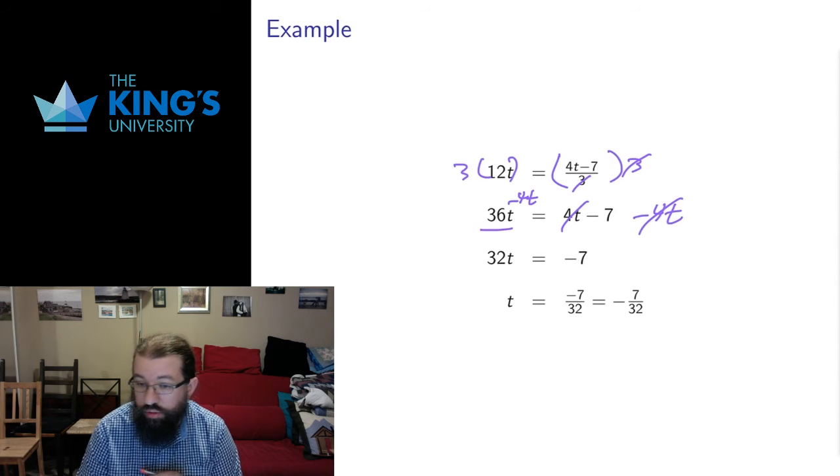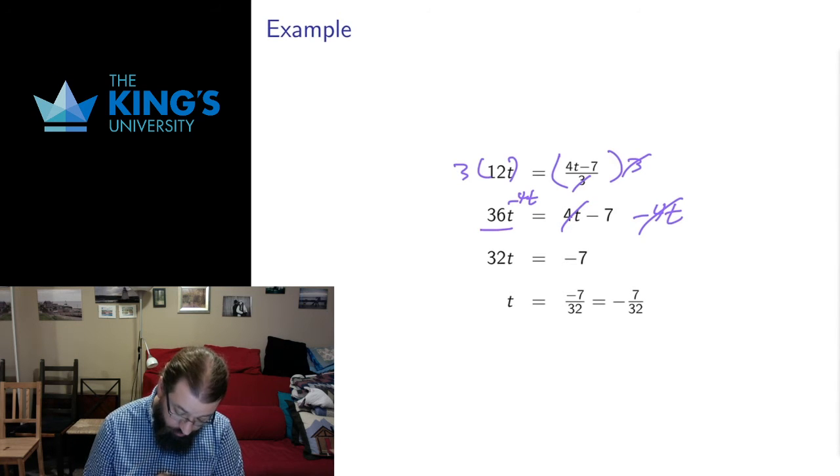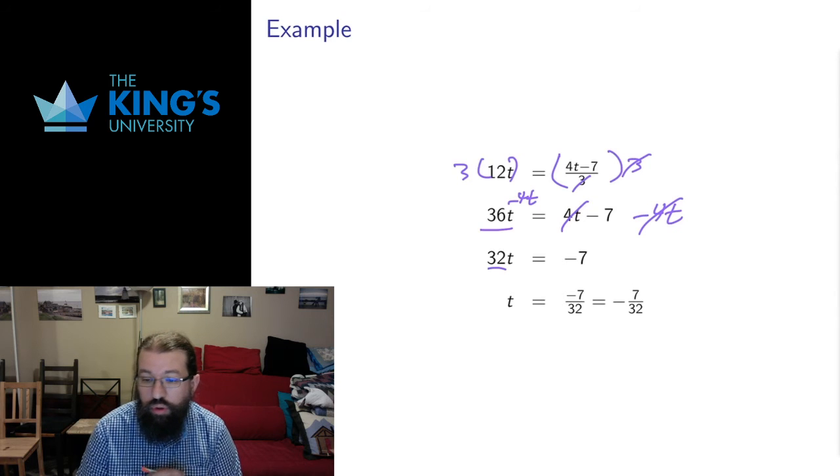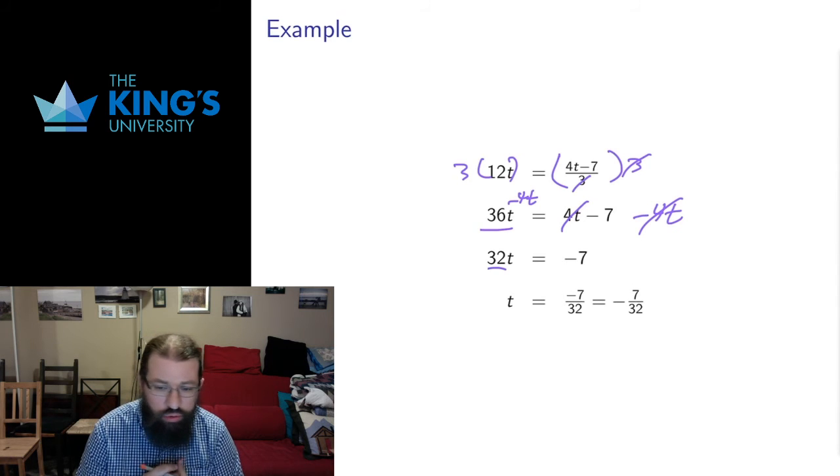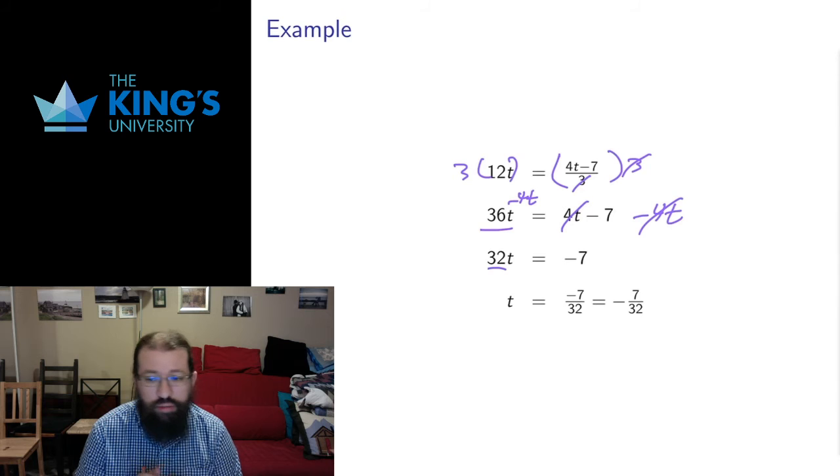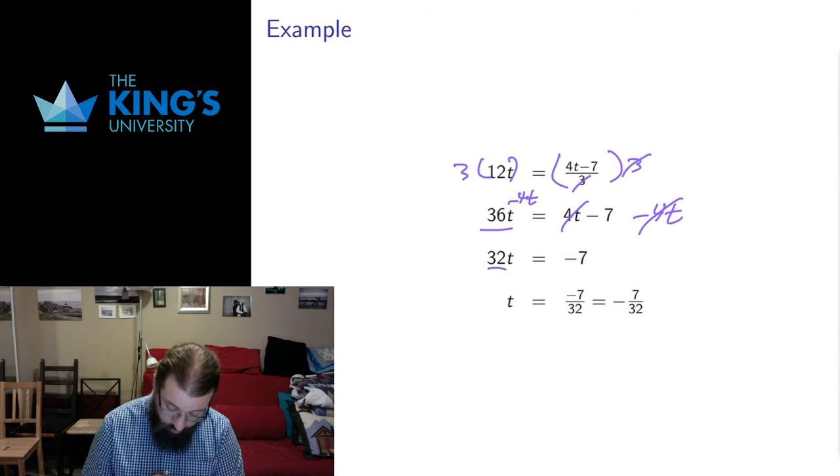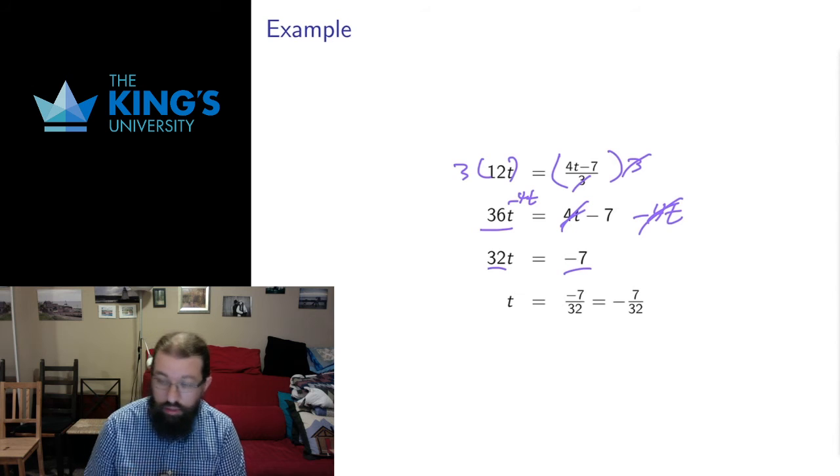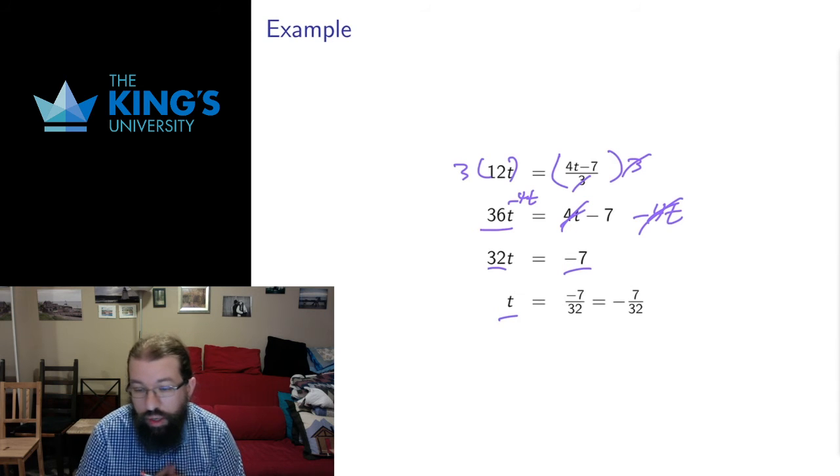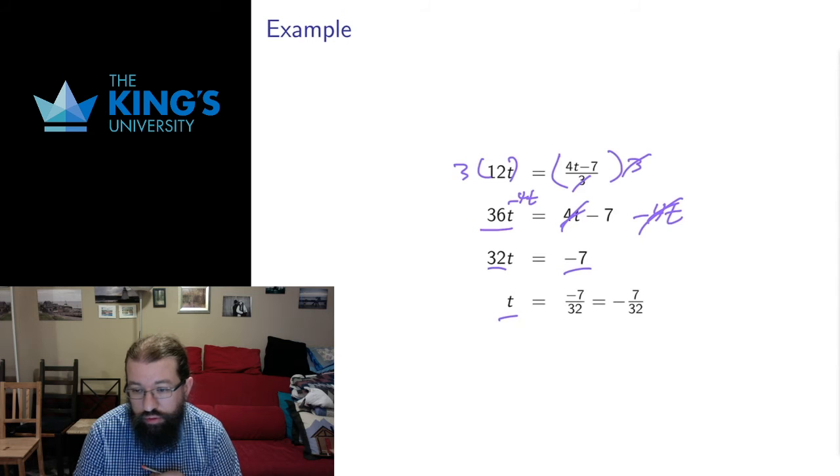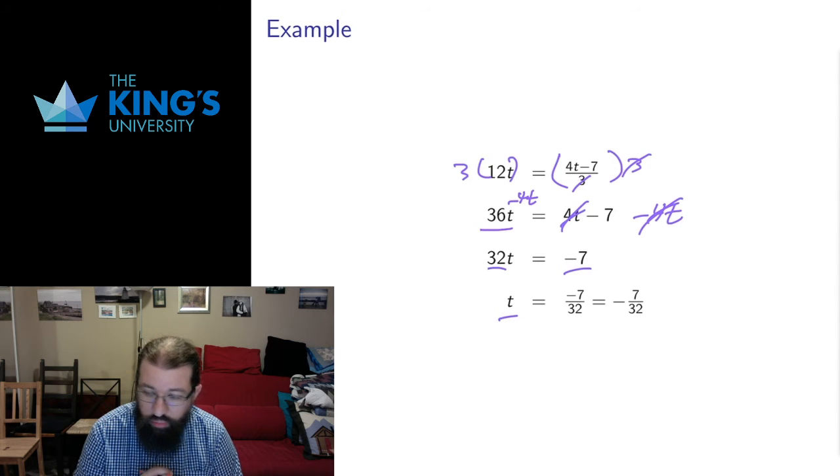Then I'm going to subtract 4t from both sides to try and get rid of this 4t, because 4t minus 4t is 0. 36t minus 4 of them. 36 minus 4 is 32. The t's are gone. All I've left is the negative 7 here. Then I can divide by 32 and figure out that my variable t that solved the original expression was negative 7 over 32.